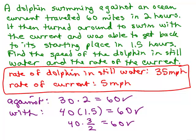So this is the correct answer. The rate of the dolphin in still water is 35 miles per hour and the rate of the current is 5 miles per hour.